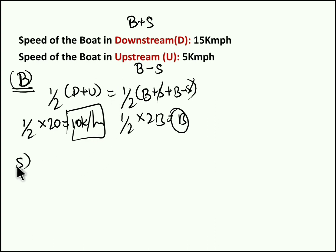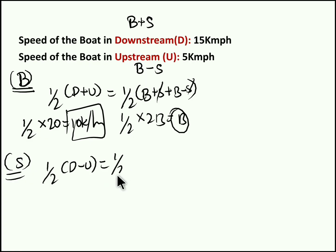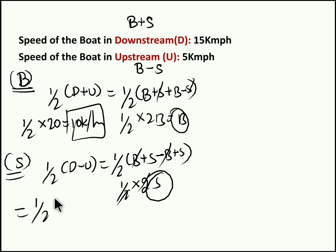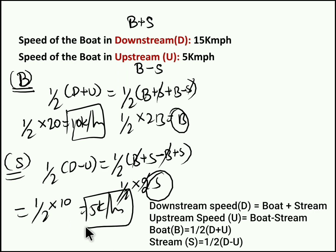Similarly, if you want to find speed of the stream, it is simply half of D minus U. Half of (D − U) is half of (b + s) − (b − s), which gives half of 2s, which equals s — the stream speed. Here half of (15 − 5) is half of 10, which is 5 kilometers per hour. So 5 kilometers per hour is the speed of the stream.